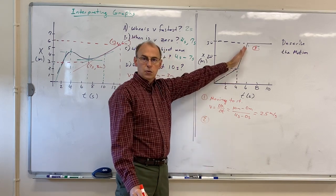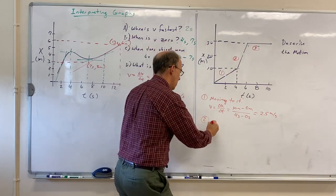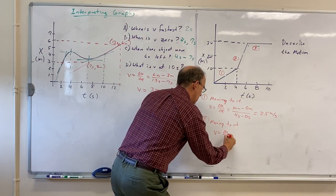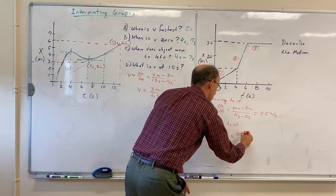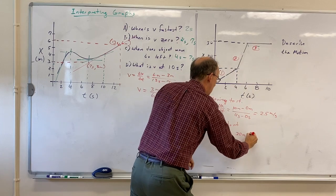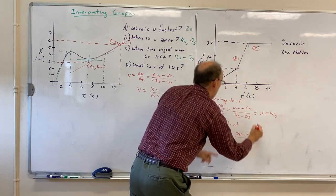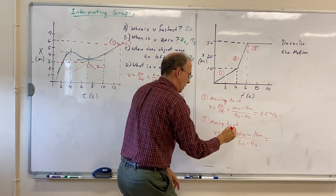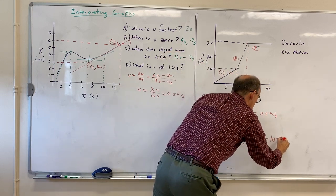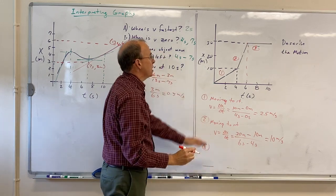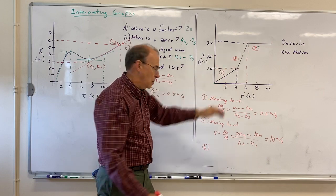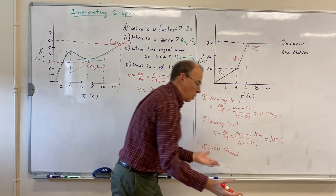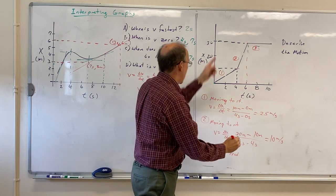In region two, the slope is steeper so the particle is going faster, and the slope is still positive so the particle is still moving to the right. V = Δx/Δt = (30 m − 10 m) / (6 s − 4 s) = 20/2 = 10 meters per second. In region three, the slope is zero, so that means V is zero — the particle is stopped. It stopped at x = 30 meters.